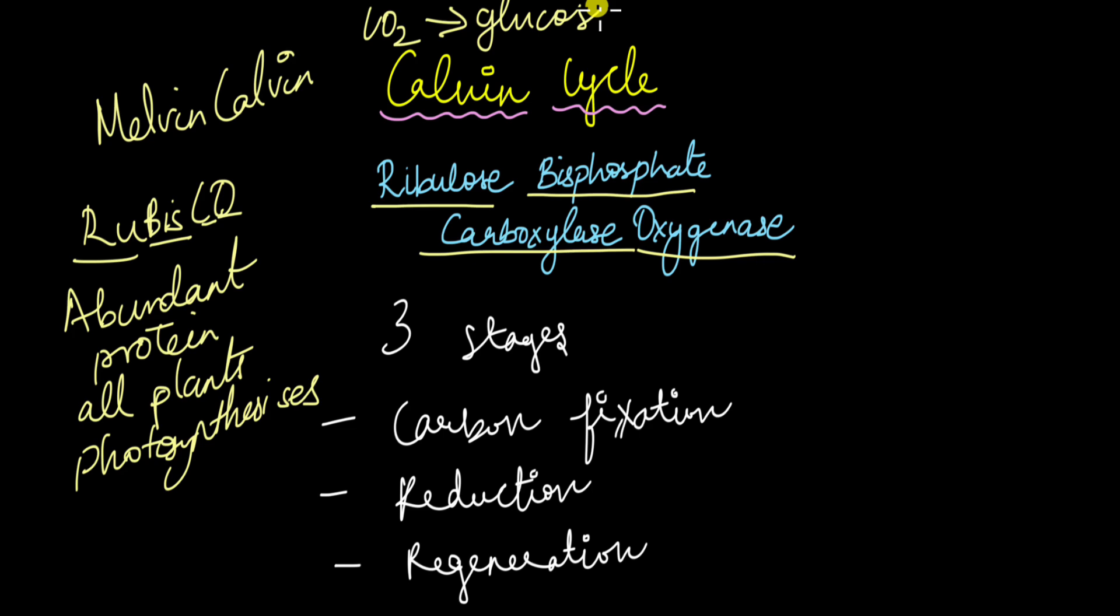Without this enzyme, this entire process will not take place which is why ribulose bisphosphate carboxylase oxygenase or rubisco is the most important enzyme in the plants. The Calvin cycle takes place in three stages. The first stage involves carbon fixation, second stage is reduction and the third stage is regeneration. Let's take a closer look at this Calvin cycle to understand what these three stages are.